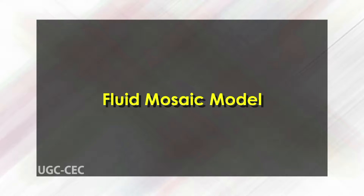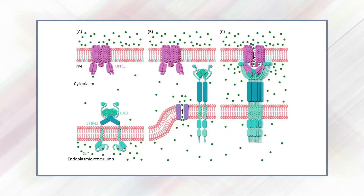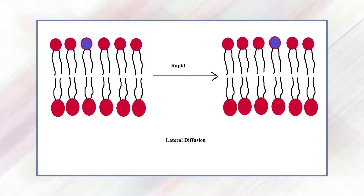The fluid mosaic model is used to describe the interactions of lipids and proteins in biological membranes. This model proclaims the concept of lateral diffusion, stating that proteins can freely move about within a membrane and that such membranes are considered to be effectively two-dimensional.